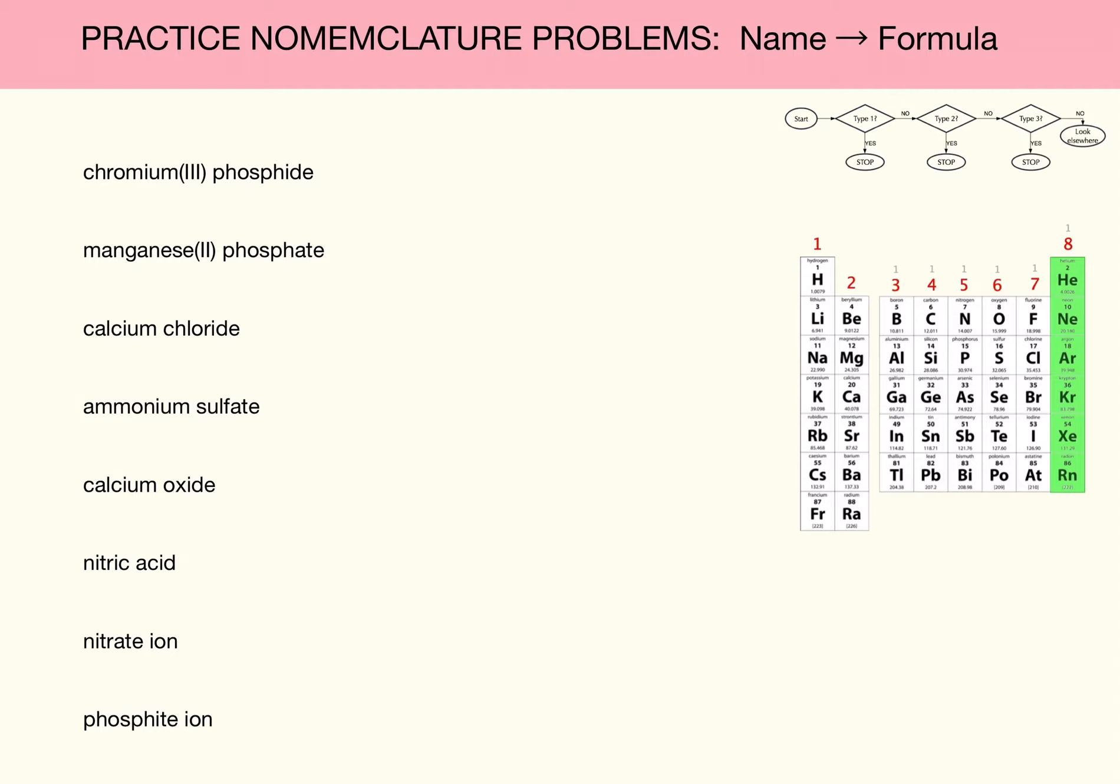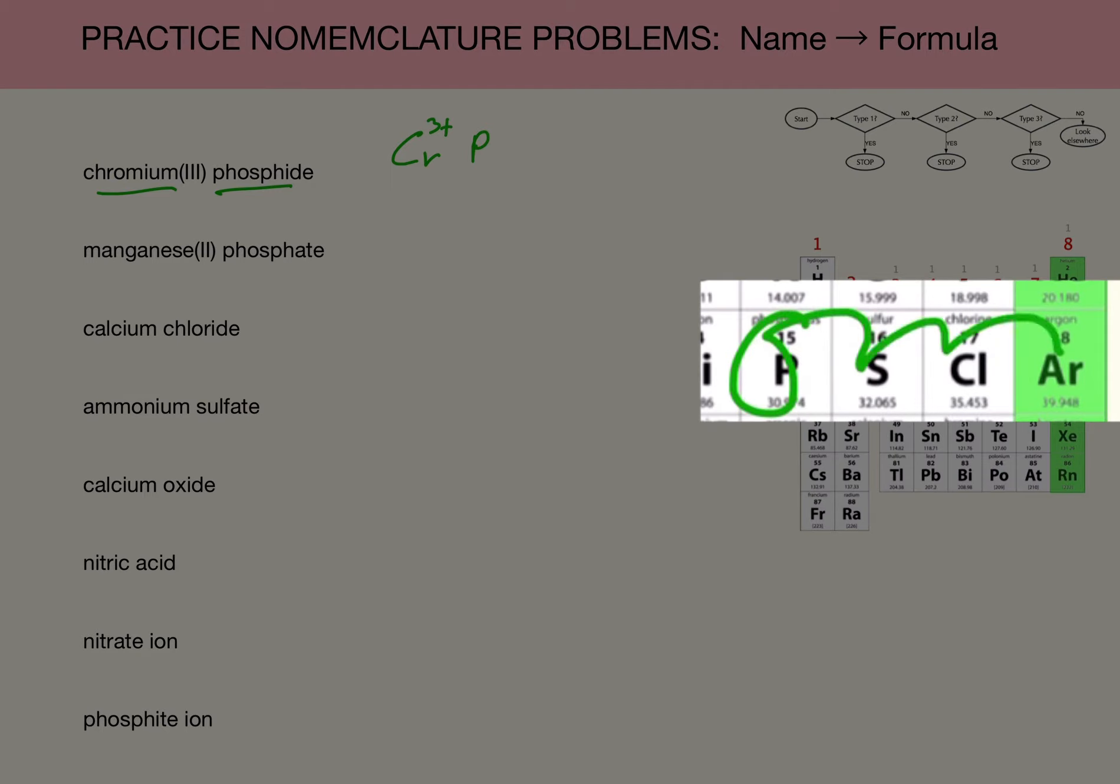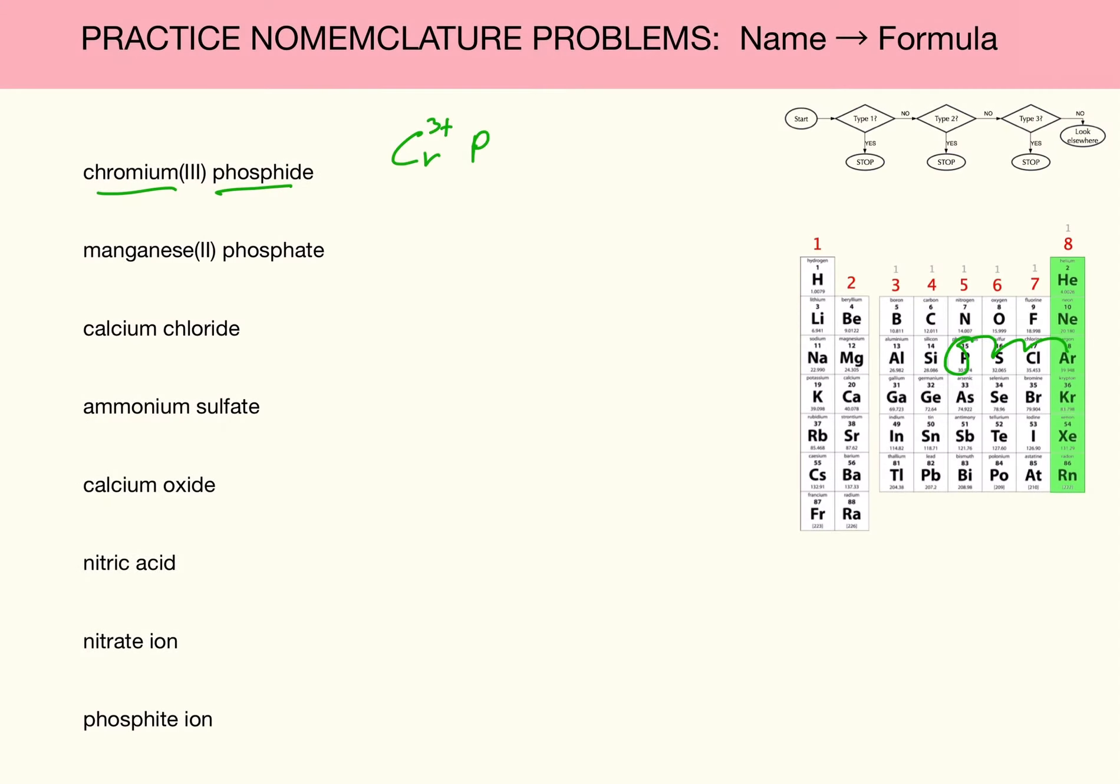Provide the formula for the following compounds. Chromium(III) phosphide. What's the charge on chromium? 3+. Phosphide, that's going to be a -3, and so that looks like it's charge neutral as it is. The formula is just CrP.